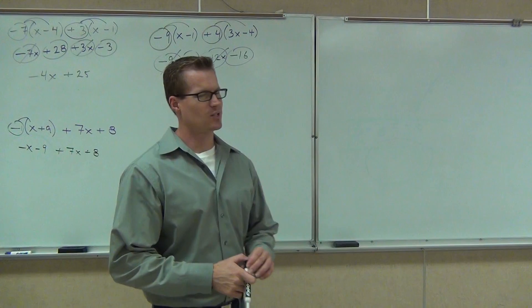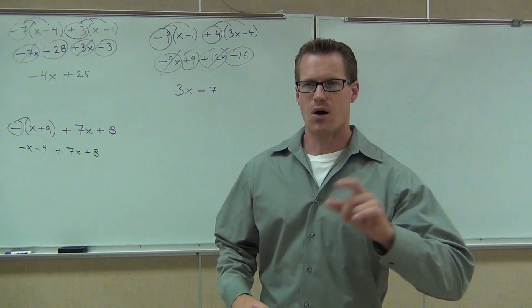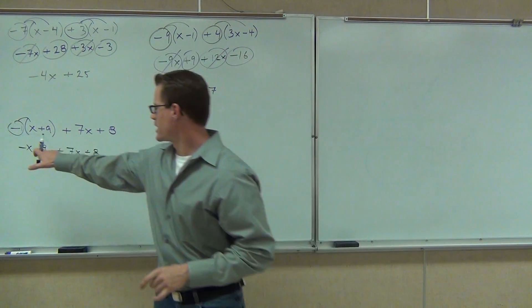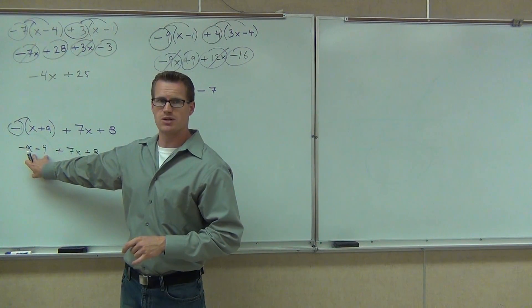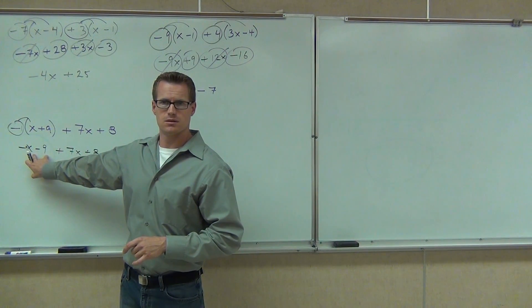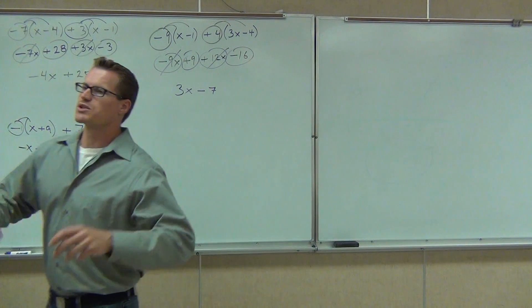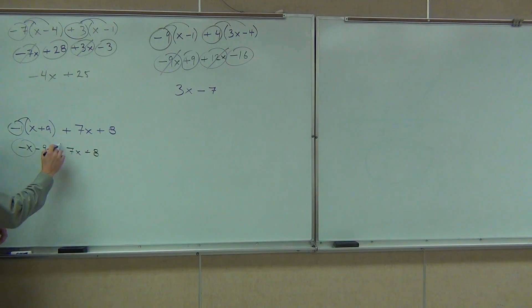Take a close look at that, guys. Sometimes people get a little bit iffy on this. Are you okay on why this became negative x and why this, especially this one, became minus 9? Nudge your head if you're okay with that. We're almost done. We've got to combine some like terms. I see a negative x. I see a plus 7x. We're circling those with those signs. How much does that give us? 6x. Good deal.